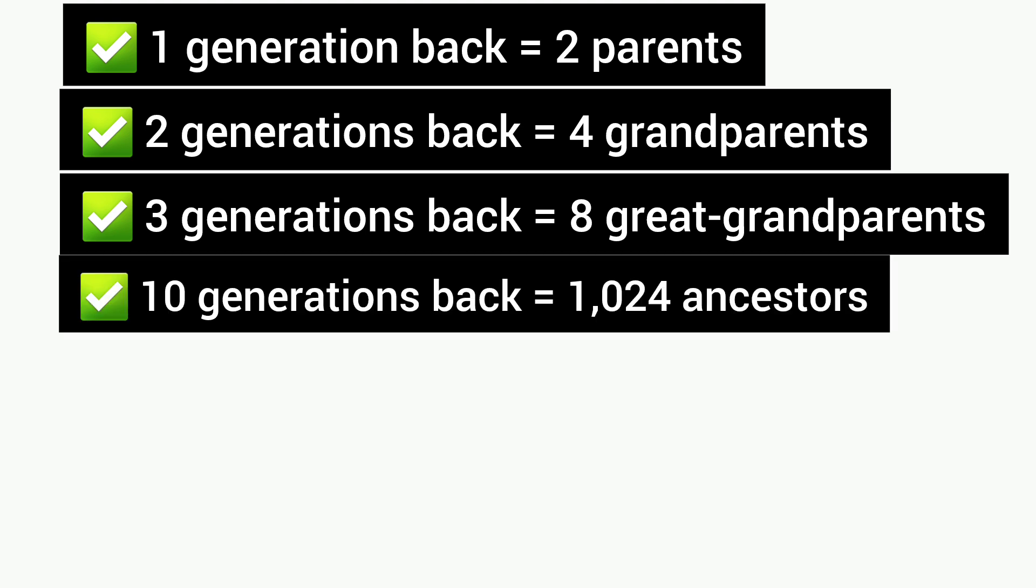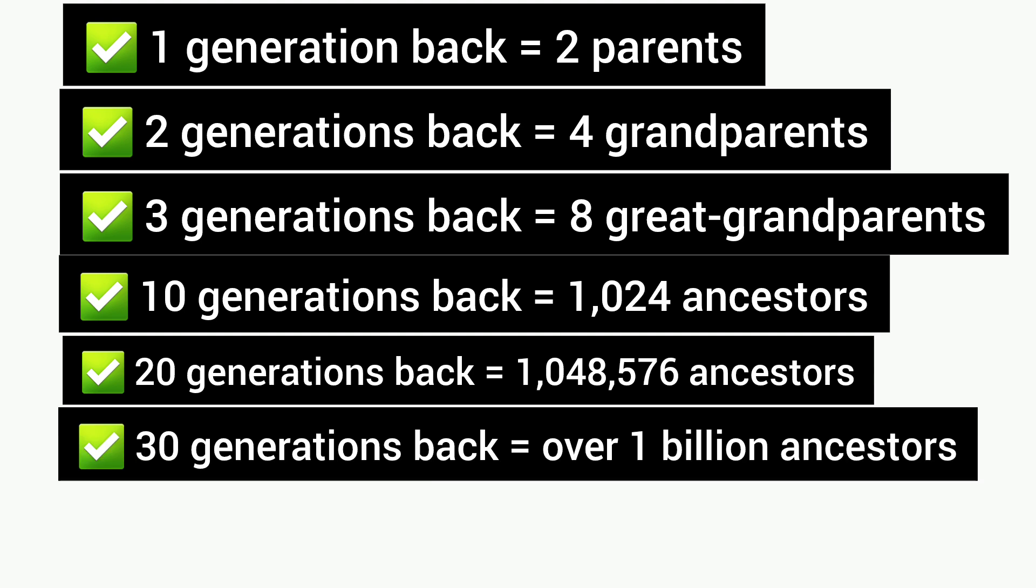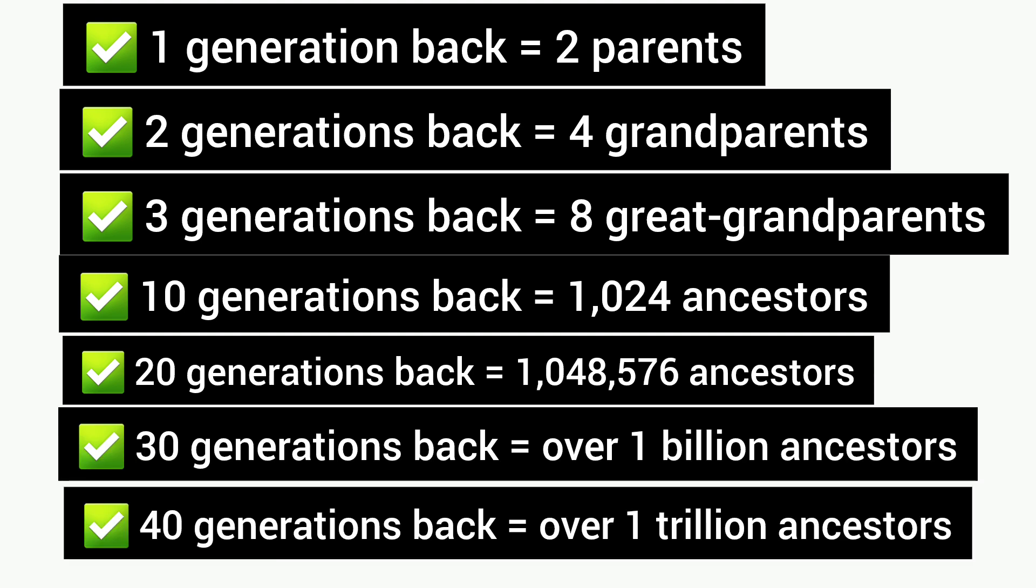ten generations back equals 1,024 ancestors, twenty generations back equals 1,048,576 ancestors, thirty generations back equals over one billion ancestors, and forty generations back equals over one trillion ancestors. Now let's consider this. Forty generations is about 1200 years ago, which takes us back to around the time of Charlemagne.